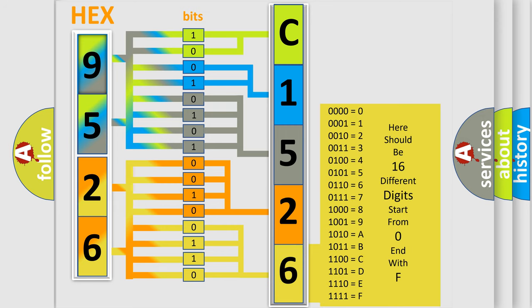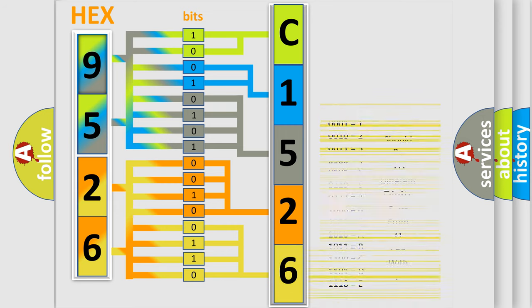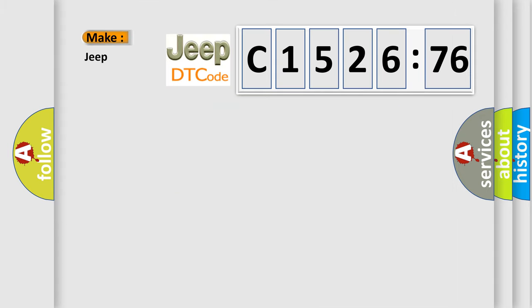A single byte conceals 256 possible combinations. We now know in what way the diagnostic tool translates the received information into a more comprehensible format.